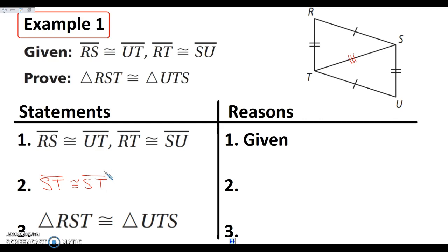Remember back in chapter 2 when we were talking about the reflexive, symmetric, and transitive properties, and I said that reflexive seemed really silly because it was like, 'oh, A equals A — well, no kidding.' Here, in this example, in this chapter, and in these proofs, this is where the reflexive property is going to be a huge part of those proofs. You have to show three pairs of sides are congruent. Without that, we can't prove the triangles are congruent. So anytime you see two triangles sharing a side, I want you to mark it and write that they are congruent by the reflexive property.